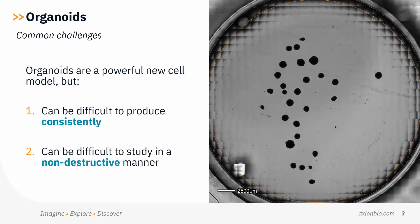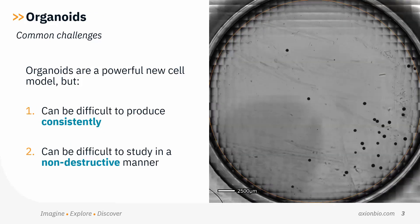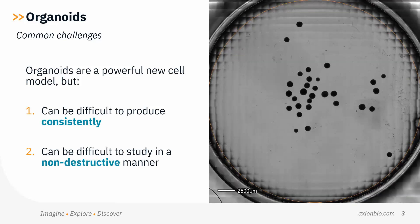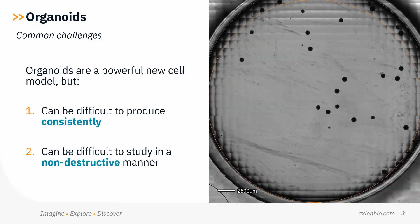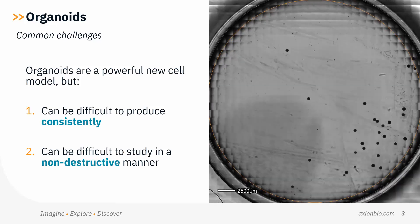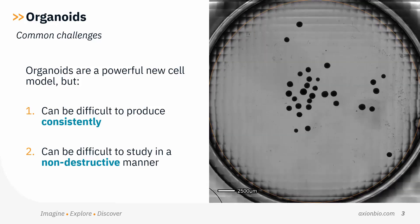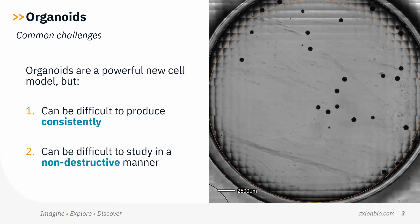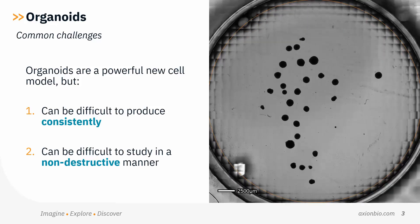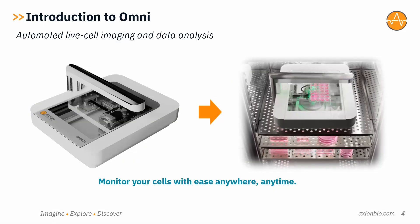Organoids are a powerful new cell model, but there are often two major challenges. One, they can be difficult to produce consistently. Two, they can be difficult to study in a non-destructive manner. You spent months making your cell model, so the last thing you want to do is fix and stain it to study it. At Axion Biosystems, our goal is to help you capture the complex biology of your cells non-invasively in real time.